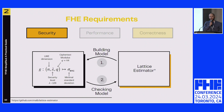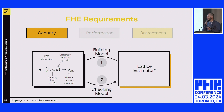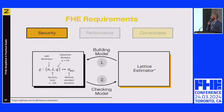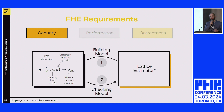In TFHE, we fix the ciphertext modulus to 64 bits and the security level to 128 bits, leaving the LWE dimension as the remaining variable. We then have a security model, and we verify it by sending parameters back to the lattice estimator. The new variable this year is the variance used for the noise. With all these parameters sent back to the lattice estimator, we confirm the parameters are indeed secure.